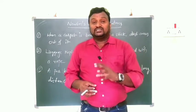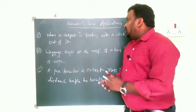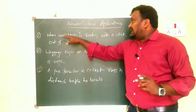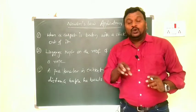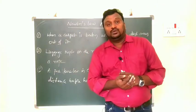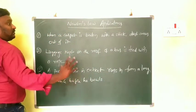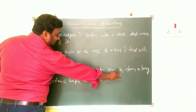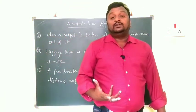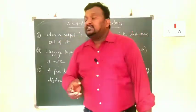In this video I am going to explain a few applications of Newton's law mentioned in your 'Improve Yourself' questions. The first question is: when a carpet is beaten with a stick, dust comes out of it — what is the reason? The second is: luggage kept on the roof of a bus is tied with a rope — why? The third is: a fast bowler in cricket runs from a long distance before he bowls — why?